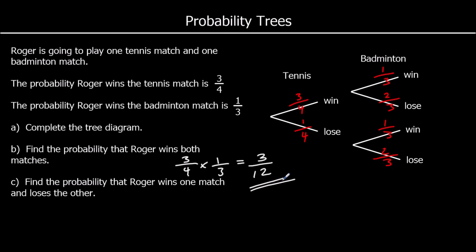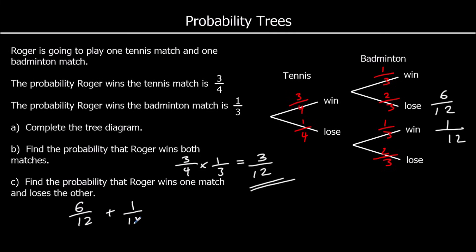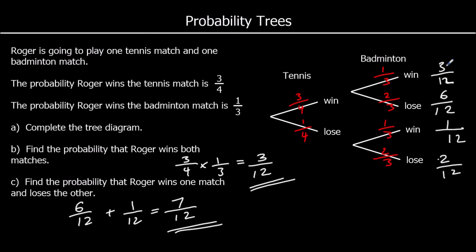Find the probability that Roger wins one match and loses the other. So it's either win then lose: 3 quarters times 2 thirds is 6 twelfths, or lose then win: 1 quarter times 1 third is 1 twelfth. So we've got 6 twelfths plus 1 twelfth, which is 7 twelfths. And if we worked out all the probabilities, we find that they add up to one whole — 3 plus 6 is 9, plus 1 is 10, plus 2 is 12. So everything adds up to 12 out of 12, which is one whole.